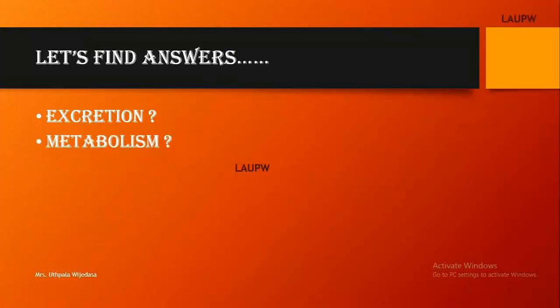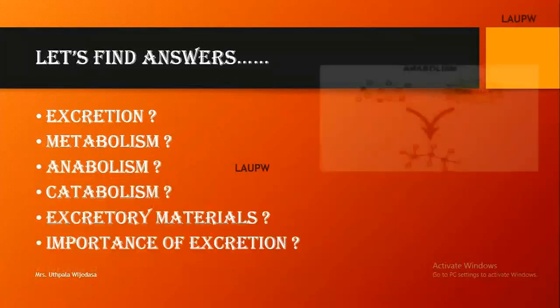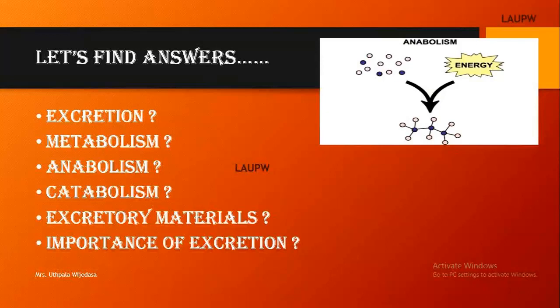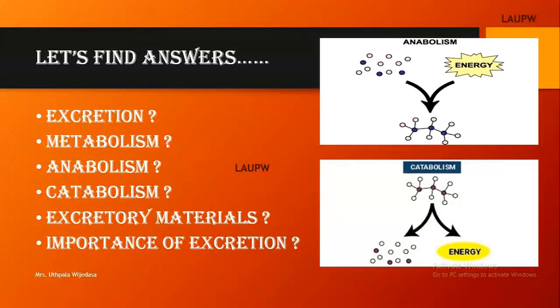Metabolism refers to all the biochemical reactions that take place in the living body collectively. Metabolism is divided into two types: anabolism and catabolism. During anabolism, complex compounds are synthesized from simple compounds, and energy is stored. During catabolism, complex compounds are broken down into simple compounds, and energy is released. For example, catabolism of proteins inside the liver forms urea and uric acid.